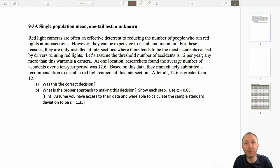Again, you can see we're looking at single population mean, one tail test. We're still looking at lower tail, upper tail, and we'll also have two tail tests. The only difference now is this little piece of information: that sigma is now unknown.